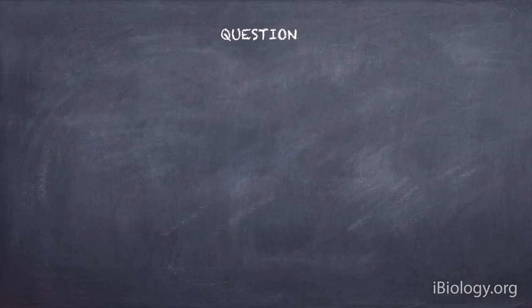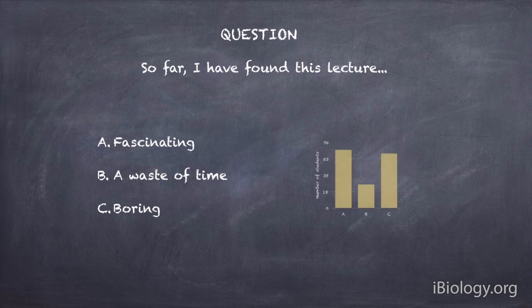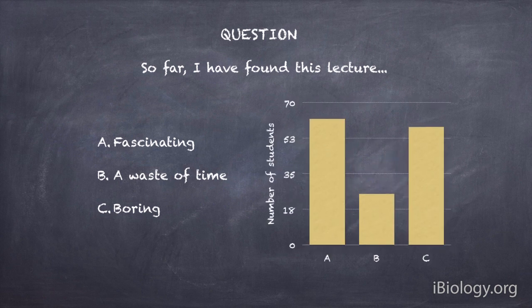There are other ways to poll a class, obviously. You can ask people to raise their hands, or use colored cards where A is red and B is green and people hold up a card for their answer. But in all those cases you're revealing your choice, and many students seem nervous about that. The clickers are nice because they're absolutely anonymous — you could ask an embarrassing question, and students probably wouldn't give you an honest answer raising hands, but on the clickers you'll get the true response.